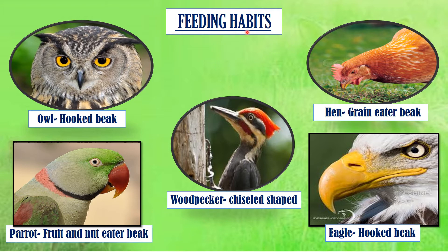Let us study the feeding habits in birds. Birds use their beaks for eating, and their beaks are suited to the kind of food they eat. For example, owls have small hook beaks because they eat small animals. Woodpeckers have chisel-shaped beaks to drill into trees for insects. Parrots have curved and hooked beaks to eat fruit and nuts. Hens have small beaks to eat seeds and grain, whereas eagles have large hook beaks to rip flesh from their prey.